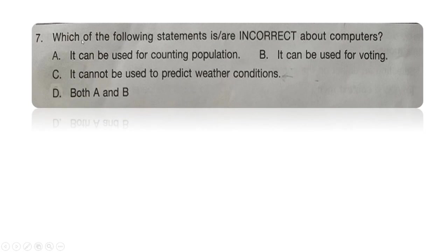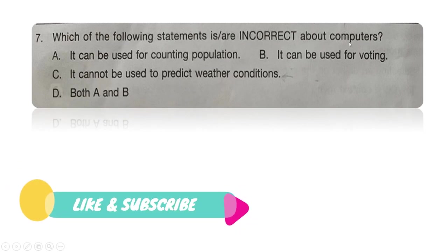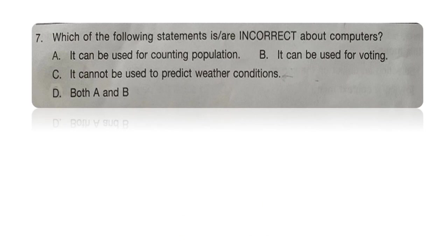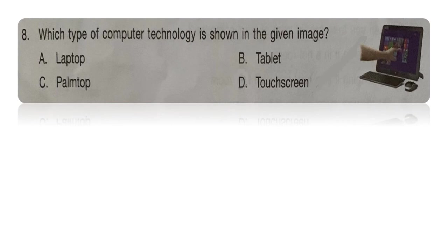Next question: which of the following statements is or are incorrect about computers? Option A: it can be used for counting population. Option B: it can be used for voting. Option C: it cannot be used to predict weather conditions. Option D: both A and B. The right answer is option D, both A and B, because you cannot use a computer to count population — you must manually count and feed the data. Similarly, it cannot directly be used for voting; it only stores and processes the information.